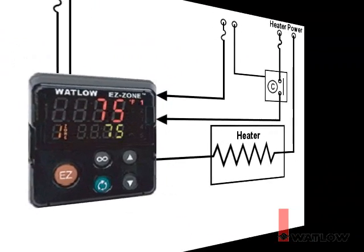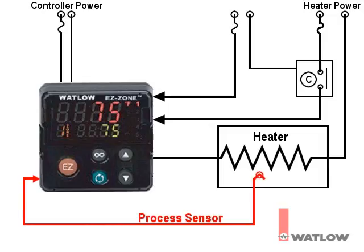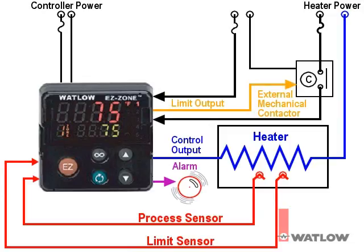The PM controller includes a control loop and an integrated limit. We are going to use EasyZone Configurator to set up the controller for an application that includes two Type-J thermocouples — one for temperature control and a second for the safety limit. The application will use three outputs: one to drive a heater, a second that notifies the operator when the temperature is higher than desired, and the limit output which cuts power to the heater when there is an over-temperature condition.